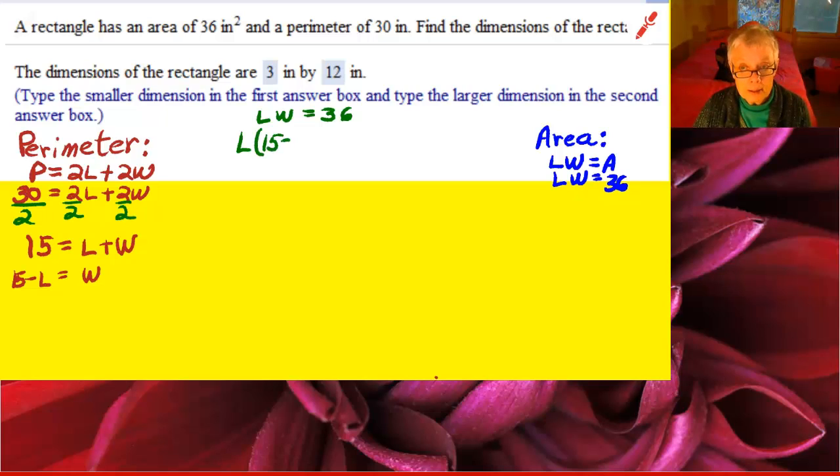So I'll have L times 15 minus L equals 36. Now I distribute: 15L minus L squared equals 36.